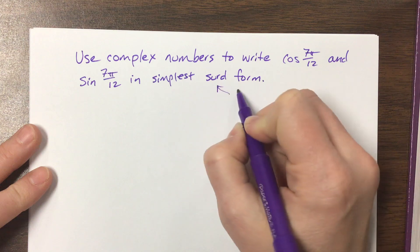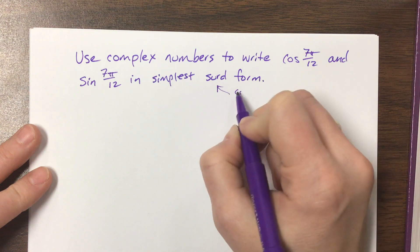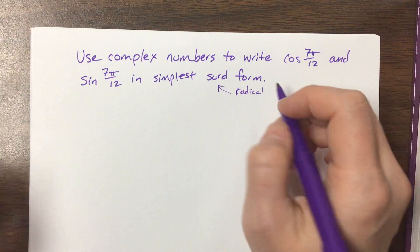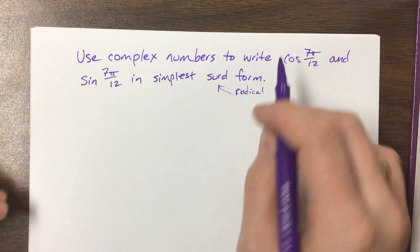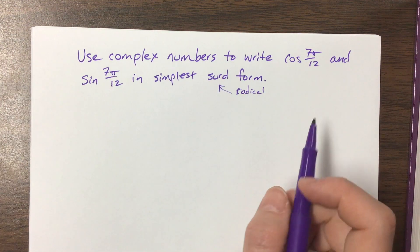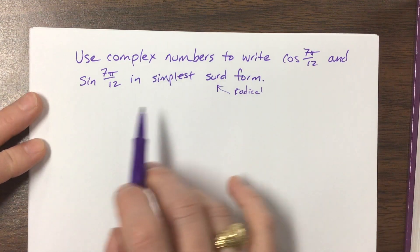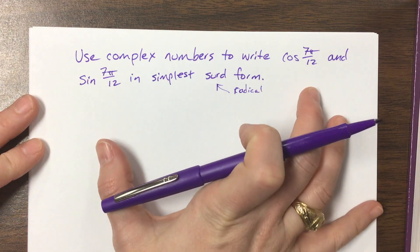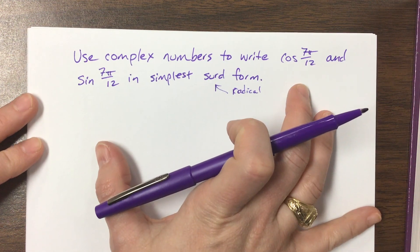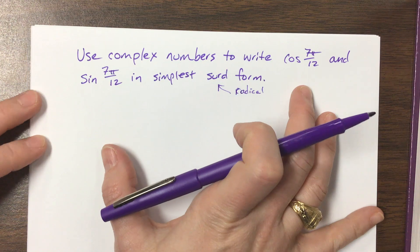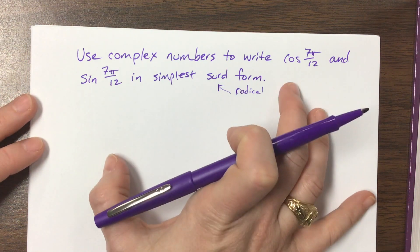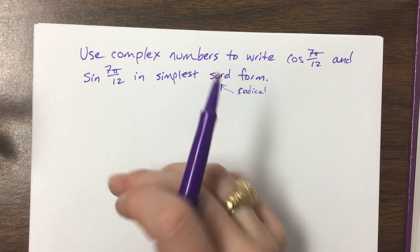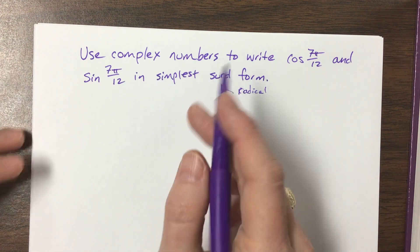Don't let that freak you out — 'surd form' just means radical, so they want square roots. That's the British way, maybe. We do have properties from trig identities that help us solve this, but we're going to use those ideas along with complex numbers to get there.